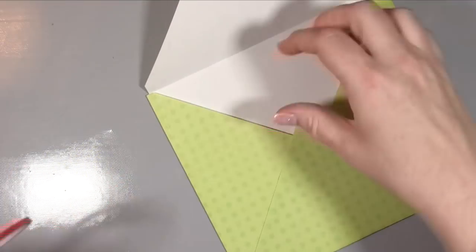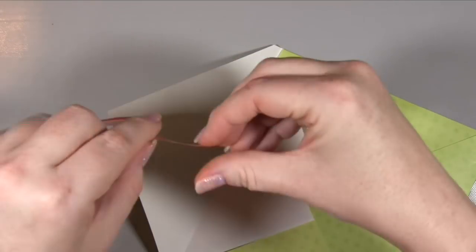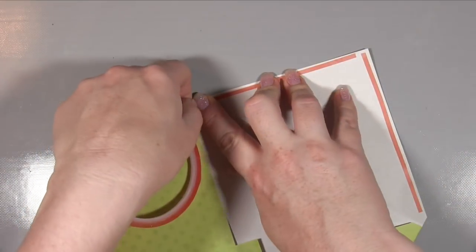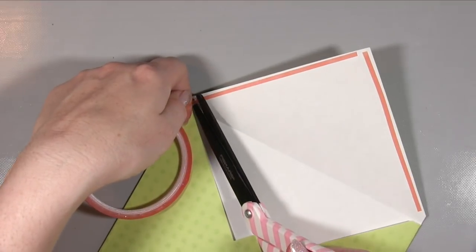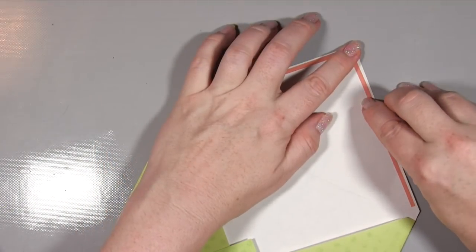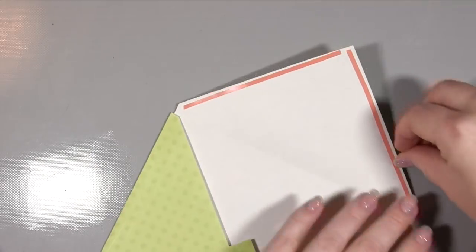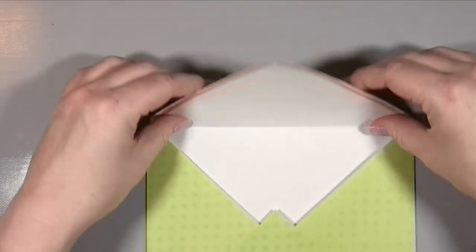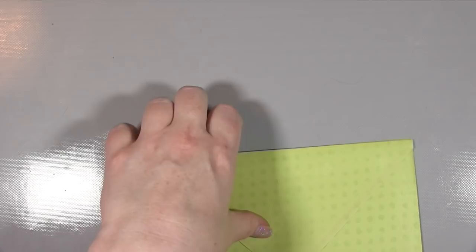Now you can see that we have our envelope. However, we need a way to seal it. Again using my red tape, this has the advantage that it will be strong, and also if you are selling your cards, someone can see very easily that there is a tape backing that needs to be peeled off, and that's how they seal the envelope.